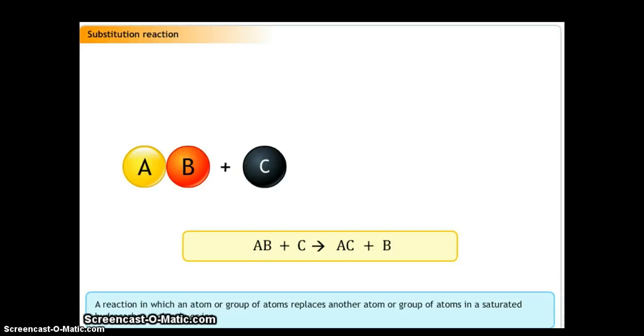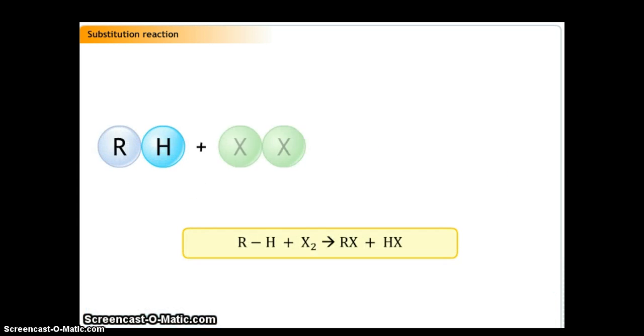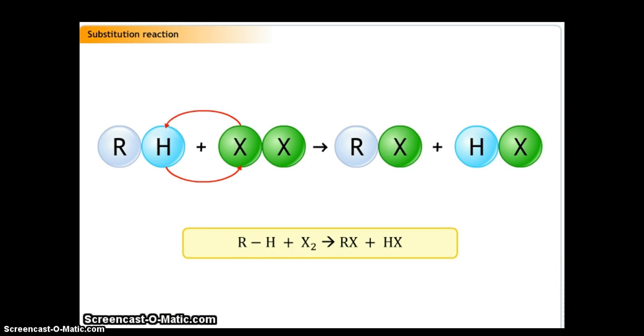A substitution reaction is a chemical reaction in which an atom or a group of atoms replaces another atom or a group of atoms in a molecule or ion. Saturated hydrocarbons being unreactive normally undergo substitution reactions. The hydrogen atoms of the hydrocarbon get replaced by atoms of other elements.